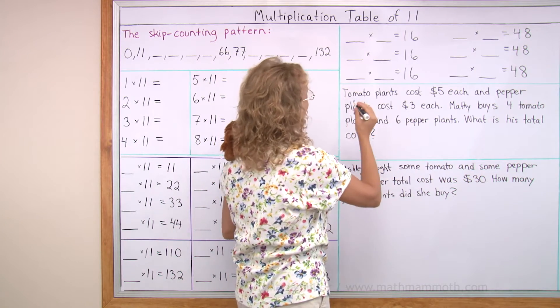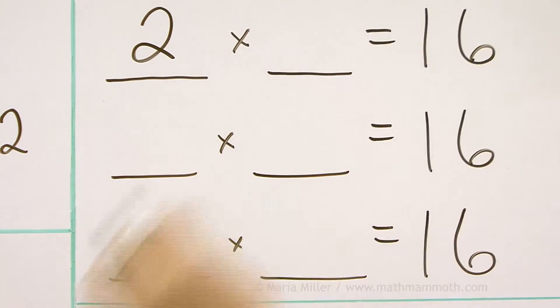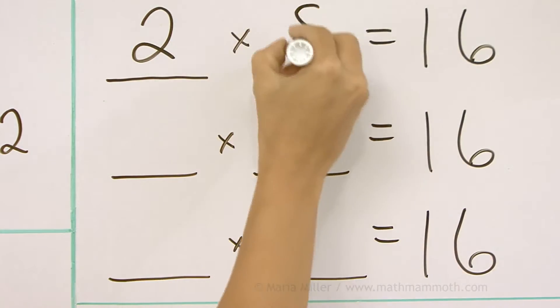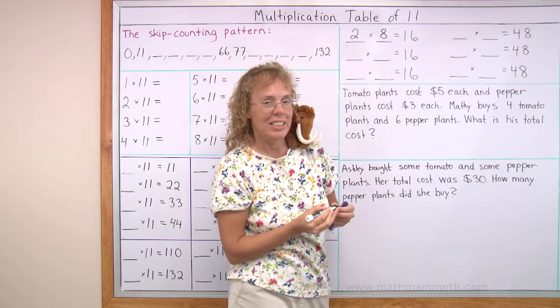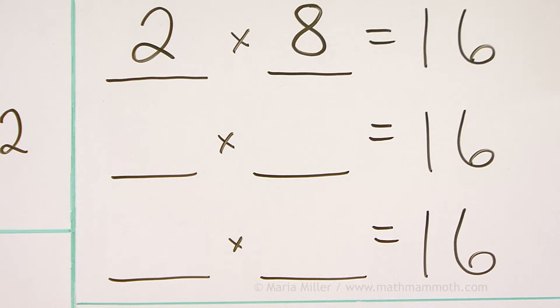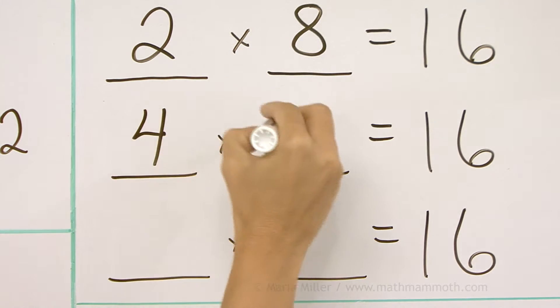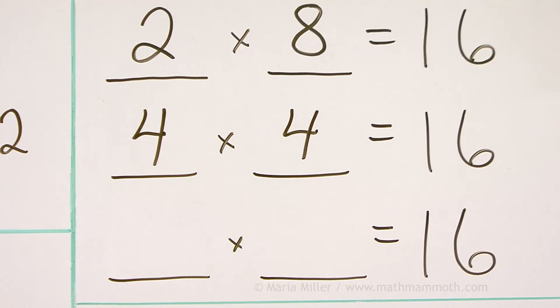Maybe one that comes to mind easily is 2 times something because it's an even number. 2 times 8. What else equals 16? Maybe you find 4 times 4. I hope so.